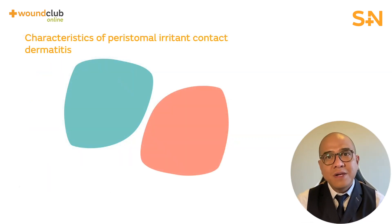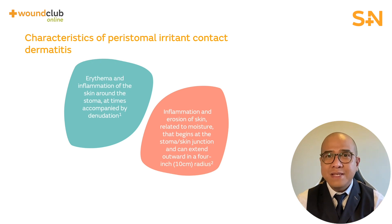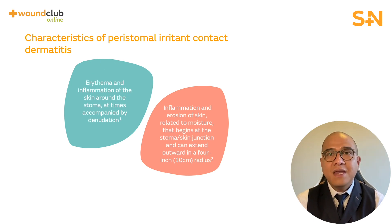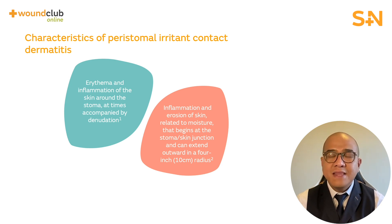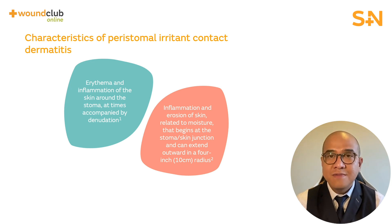Common characteristics observed when assessing patients with this type of skin damage include inflammation, erythema, and erosion of the skin at the stoma junction, which can extend outward in a 4-inch or 10-centimeter radius.